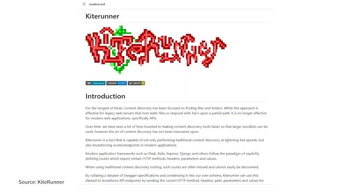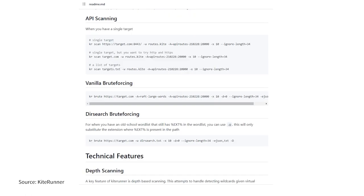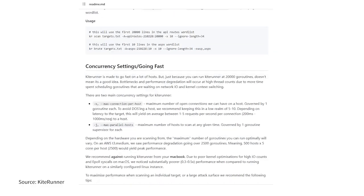The second and most popular is Kite Runner. Kite Runner is capable of helping security engineers in protecting APIs by brute forcing routes or endpoints in modern applications and can also perform traditional content discovery at a faster speed.